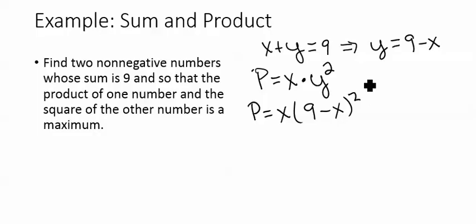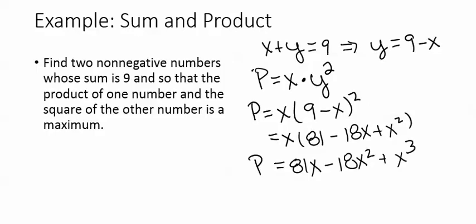As in the previous problem, before you attempt to take the derivative, let's FOIL the 9 minus x squared and distribute that so we can get an equation that's easier to take the derivative of. So we'd have 81 minus 18x plus x squared. Then I'm going to distribute that x through. So the product is actually equal to 81x minus 18x squared plus x cubed.